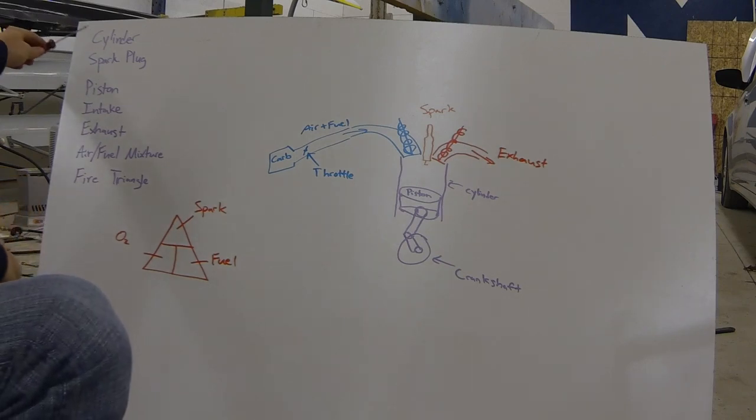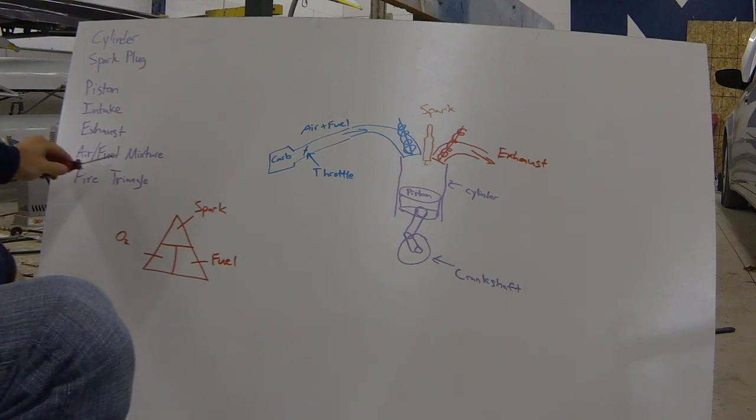So a few things we'll look at today: our cylinder, spark plug, piston, intake, exhaust, air fuel mixture that moves through the intake, and our fire triangle.